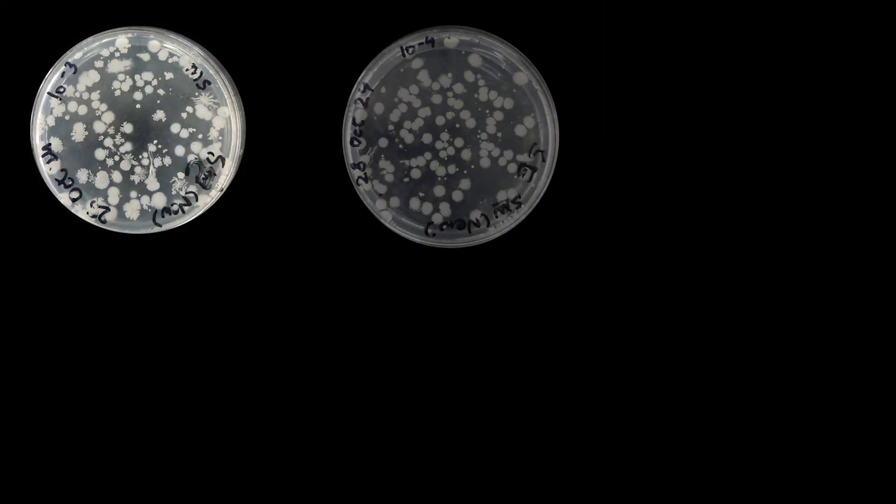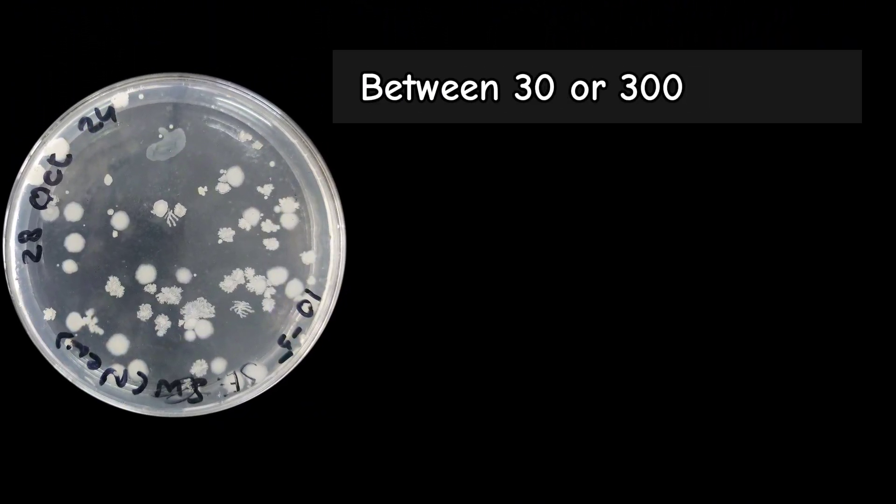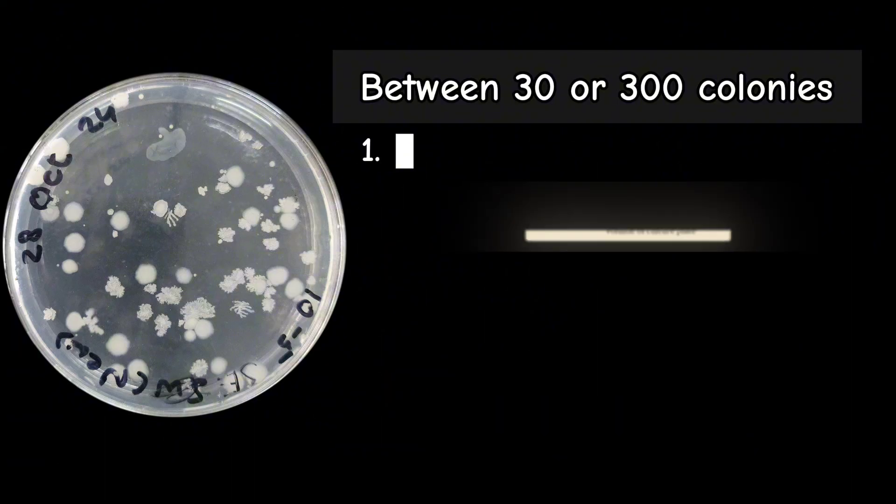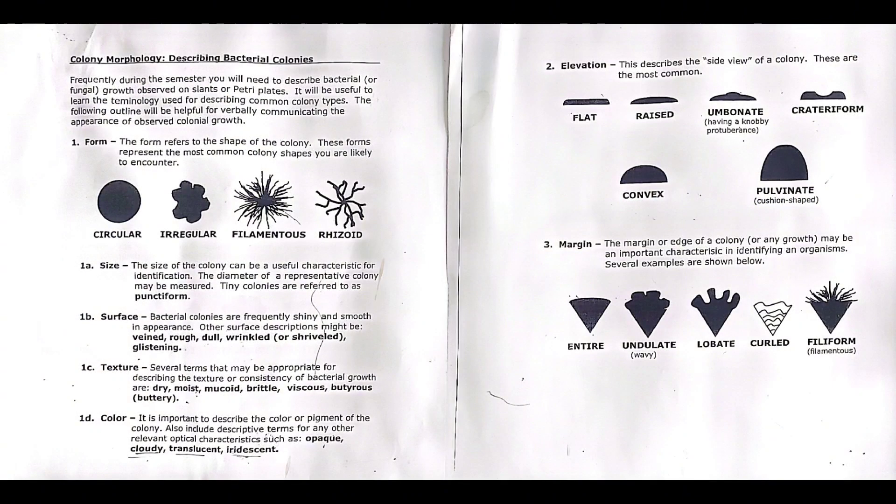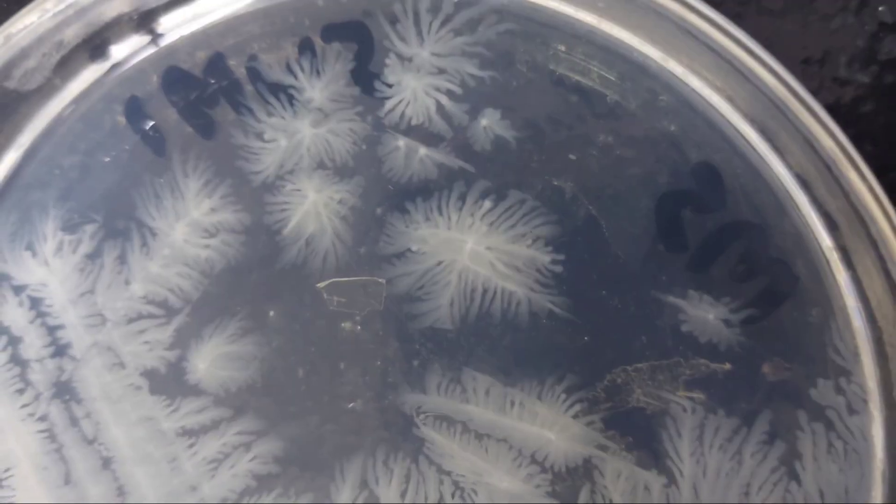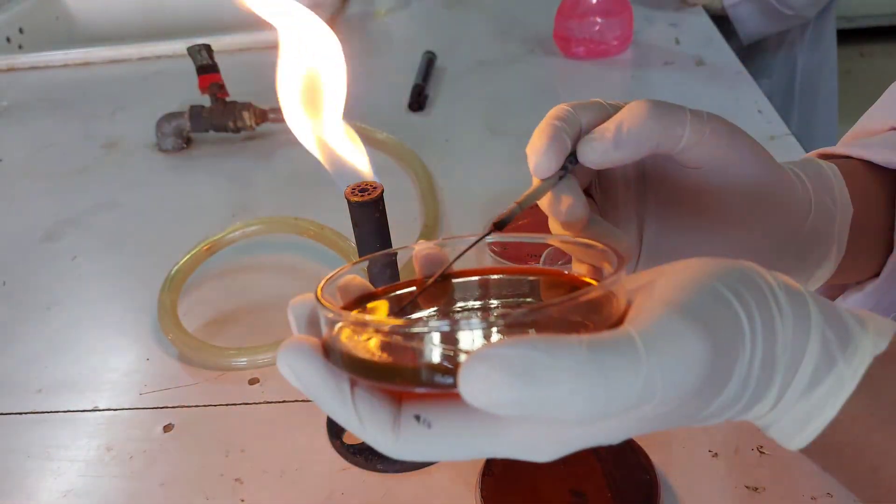After incubation, observe the bacterial colonies on the plates. Choose a dilution plate with countable colonies, typically between 30 and 300 colonies, and calculate CFU, which provides an estimate of the viable microbial load in a sample for understanding microbial growth patterns, contamination levels, and the effectiveness of sterilization techniques. Then examine the colonies for their morphology and select colonies of interest and streak them onto fresh nutrient agar plates to isolate pure microbial cultures for further analysis.